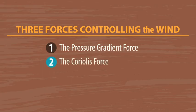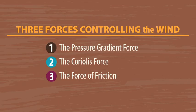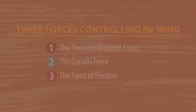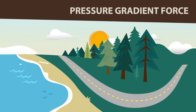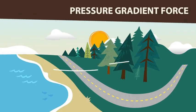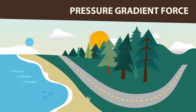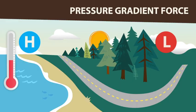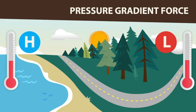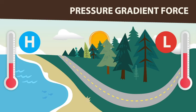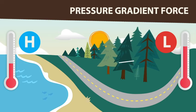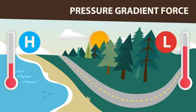The pressure gradient force is the force that starts the wind. It is the movement of air from an area of high pressure to an area of lower pressure. Horizontal pressure gradients are caused by differences in temperature.